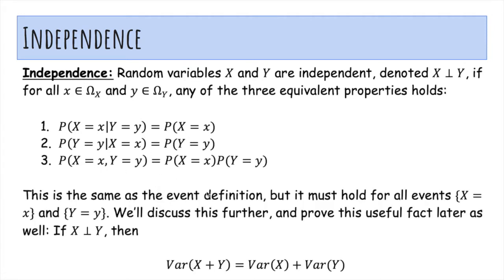You'll notice that this is exactly the same as the event definition, but it must hold for all events X equals x and Y equals y. We'll discuss this further and prove this useful fact later as well. If X and Y are independent, then the variance of the sum is the sum of the variances.